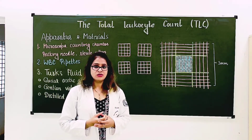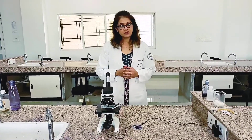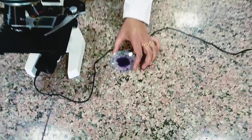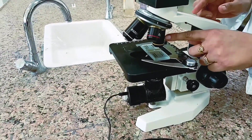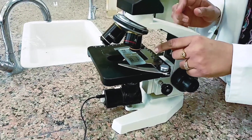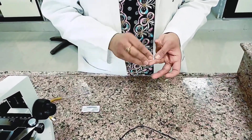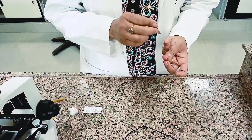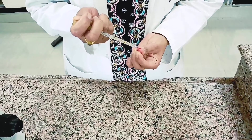Now let us see how to perform the WBC count step by step. First, keep a few drops of Turk's fluid in a watch glass before performing the pricking. Your Neubauer chamber should be kept focused at 10x or low power under the microscope. The squares of the WBC area will be visible under low power. Then sterilize the finger and when it becomes dry, prick it with one bold attempt to form a large drop of blood.